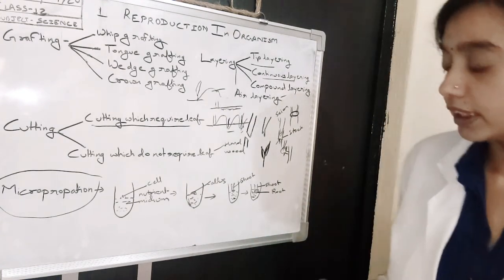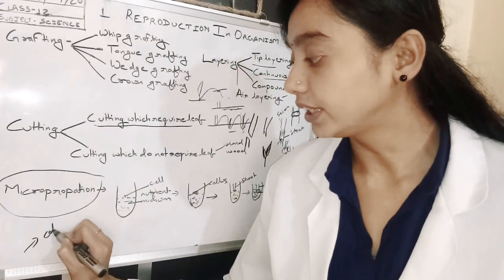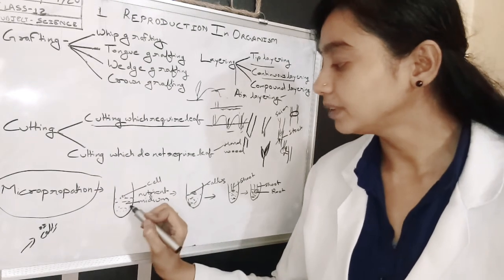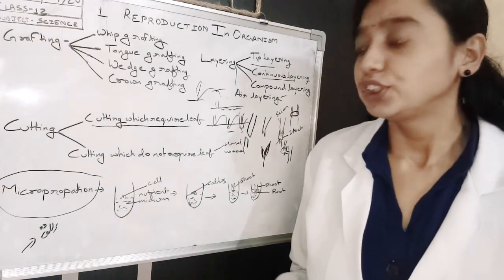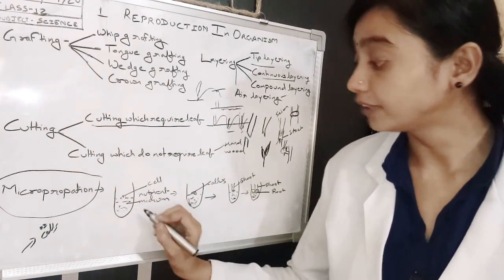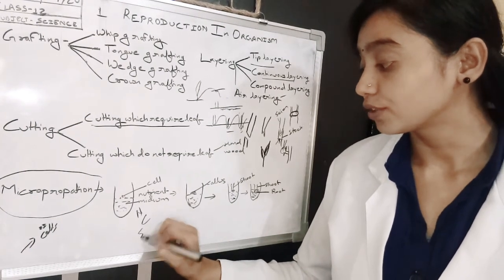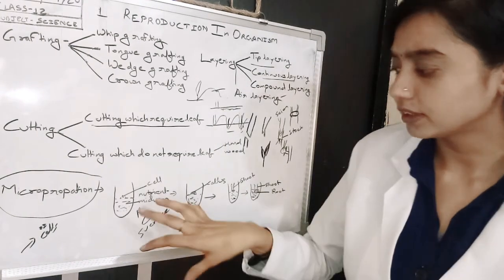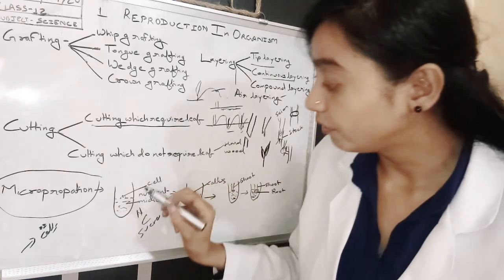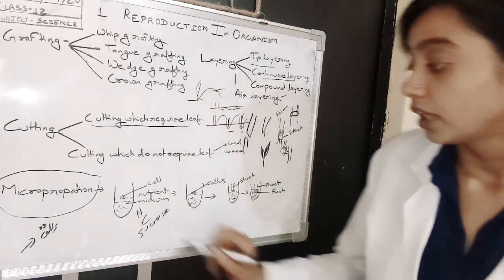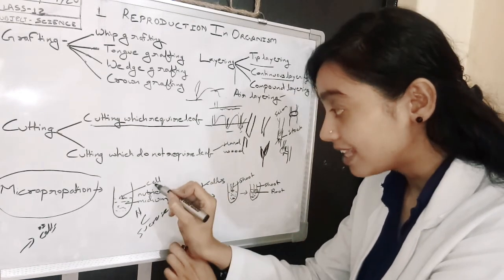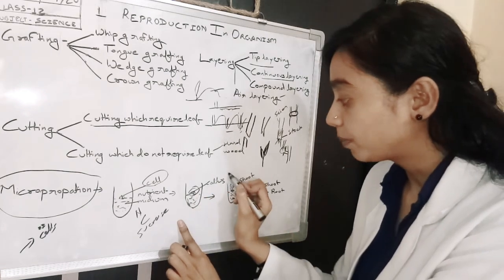Next is micropropagation. In this process, we take a few cells and prepare a nutrient medium. This medium has all the nutrients essential for plant growth - nitrogen, carbon, sucrose, and everything necessary for plant growth. We put a few cells of the plant in this nutrient medium. After some days, you observe that the cells are growing in a group form. This group is called callus.